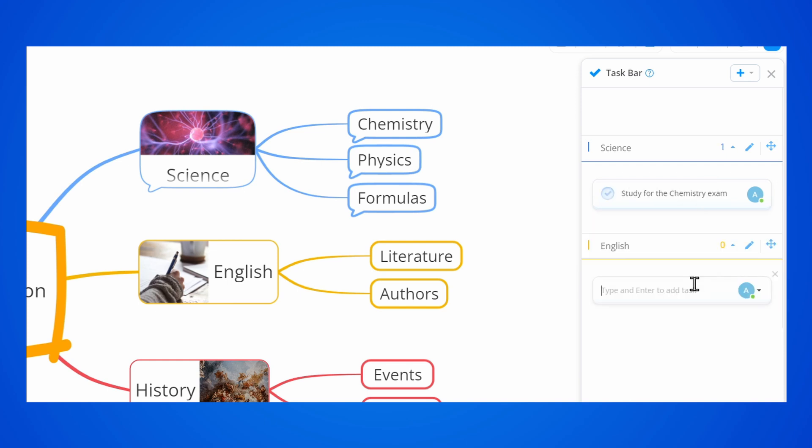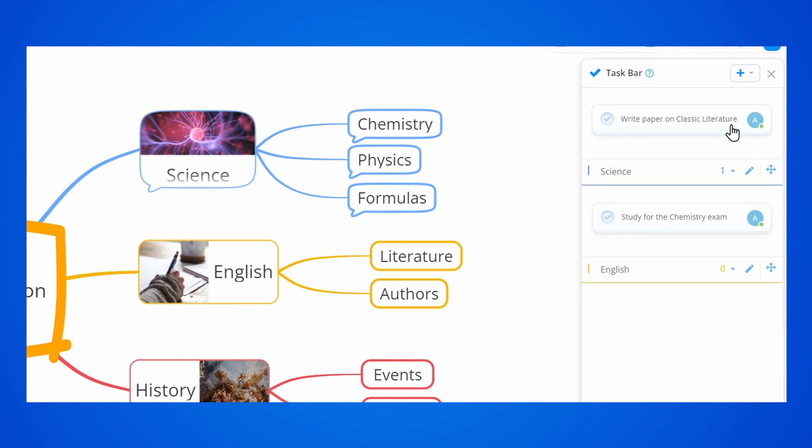You can add a task quickly by double-clicking inside a category. You can drag and drop your tasks and move them between categories.